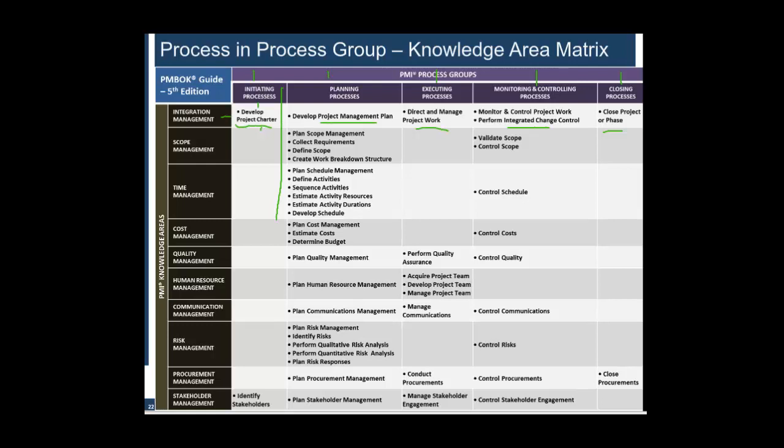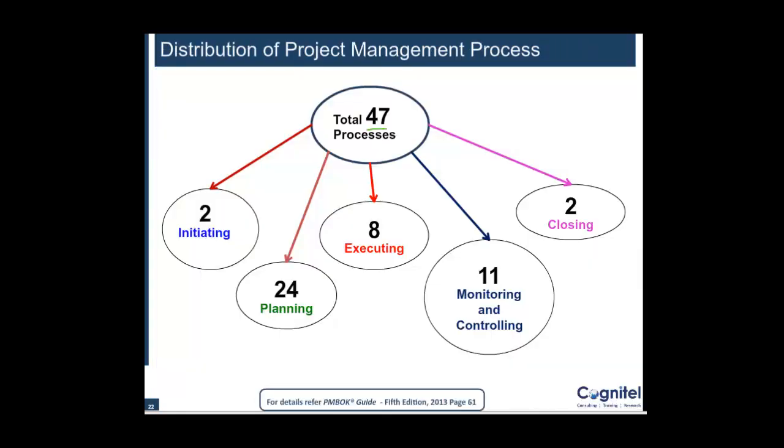Every knowledge area is contributing to the Planning process group. Similarly in Execution, there are quite a few processes, then in Monitoring and Controlling, and then in Closing. We would be looking at this matrix before we start any process to see which knowledge area and which process group it belongs to. In total there are 47 processes: 2 belong to Initiation, 24 to Planning, 8 to Execution, 11 to Monitoring and Controlling, and 2 to Closing.